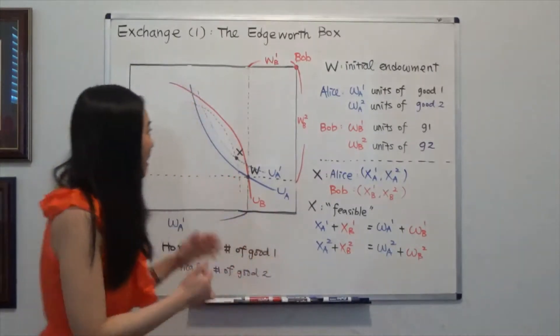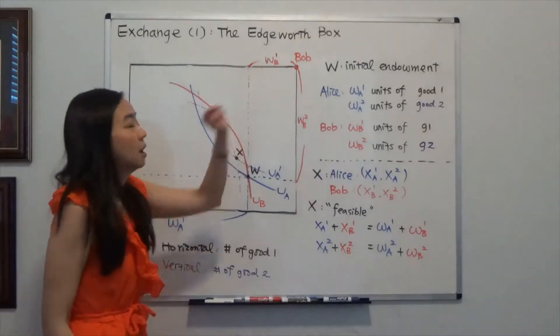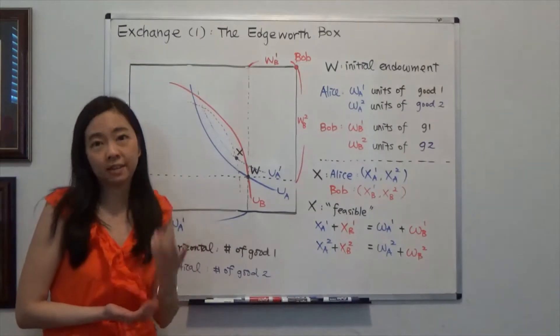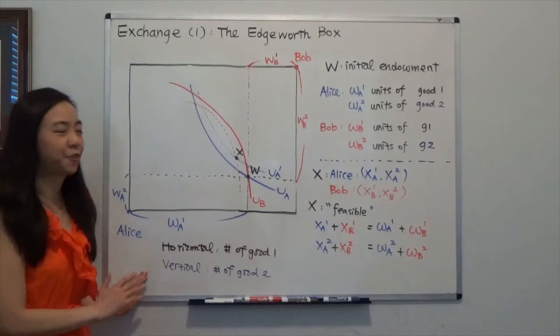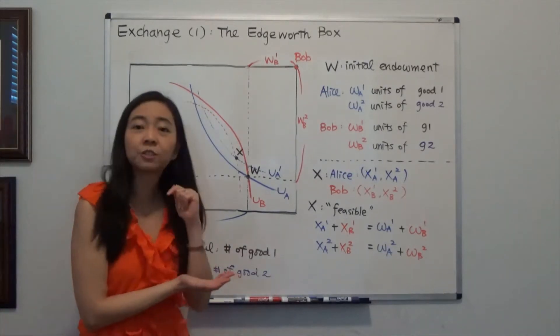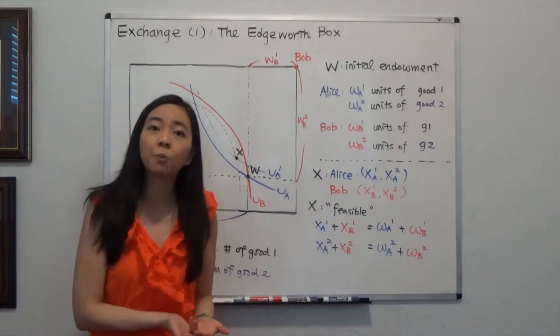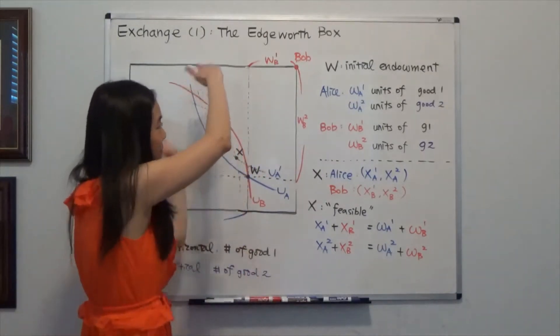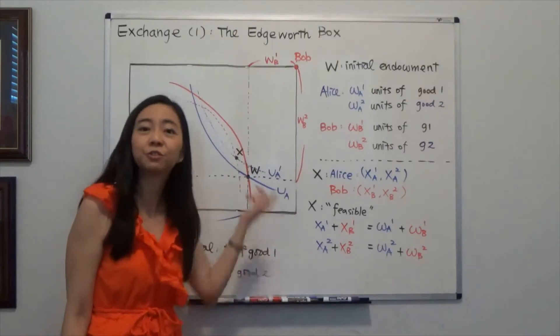So in this box, we have two individuals, Alice and Bob. When we are looking at either a consumption bundle or initial endowment or even the indifference curve of Alice, we're going to start from the bottom left. But when we are looking at the indifference curve of Bob or the consumption bundle or initial endowment of Bob, we're going to look at it from the top right. So if you have the book, you want to turn the box upside down in order to see Bob's either indifference curve or his endowment.